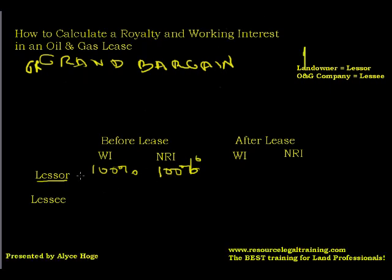So why would a lessor give an oil and gas company 100% of their working interest and only keep a small percentage of the revenue? In most cases, in the early leases, it was like a one-eighth royalty. The reason is that it is expensive to drill an oil and gas well — in fact, for most people, it is cost prohibitive. An oil and gas well can cost a million dollars and up easily.